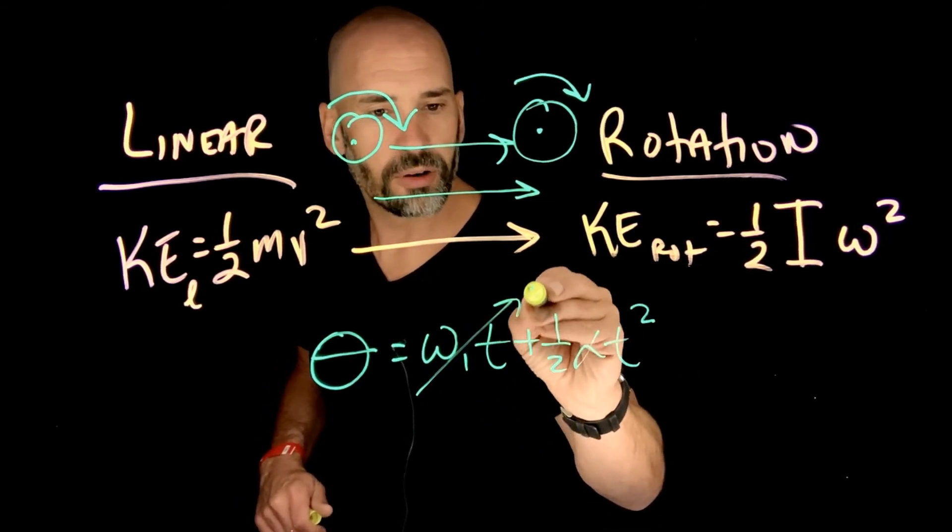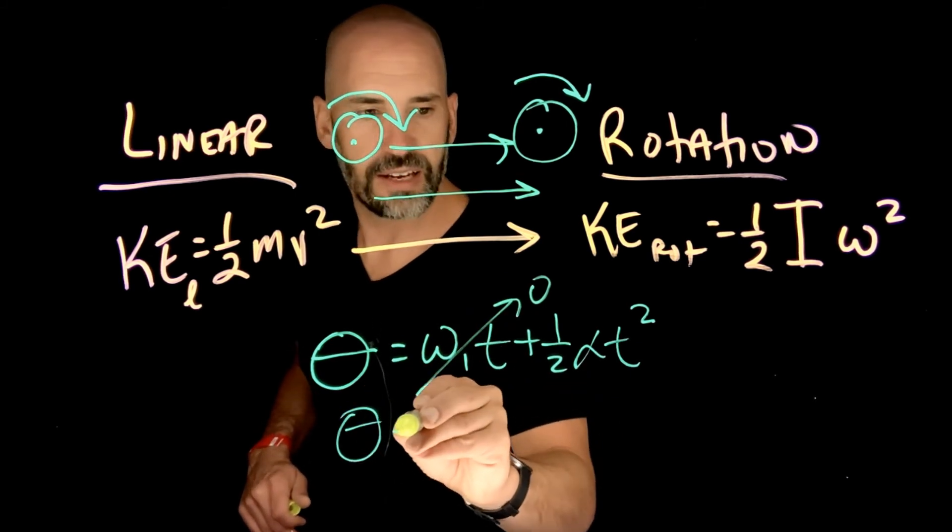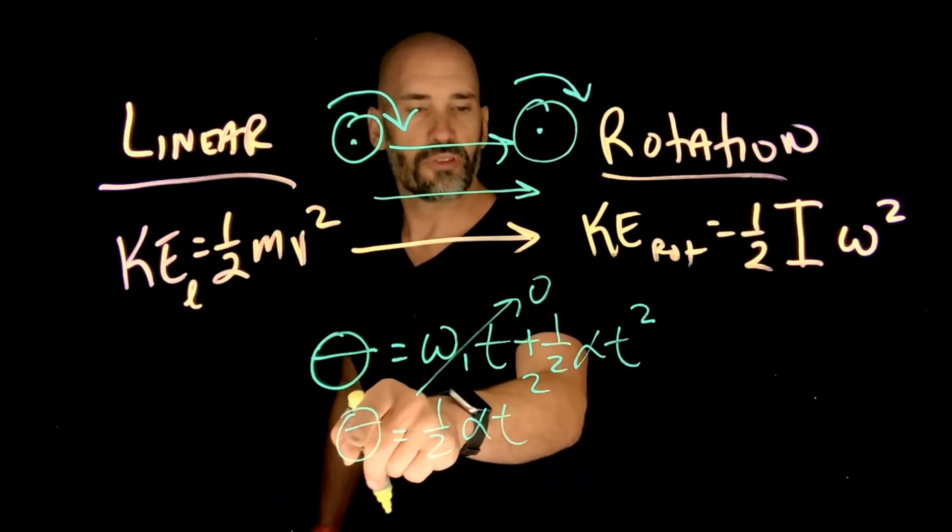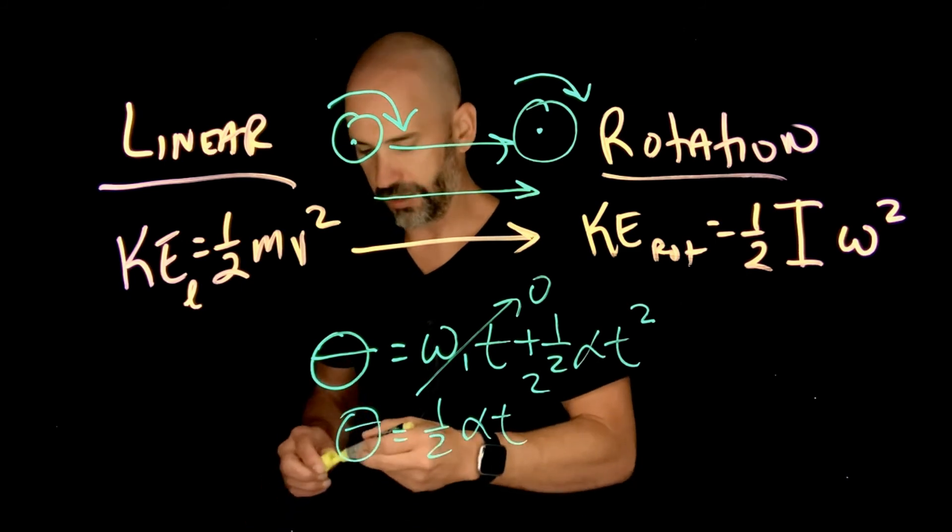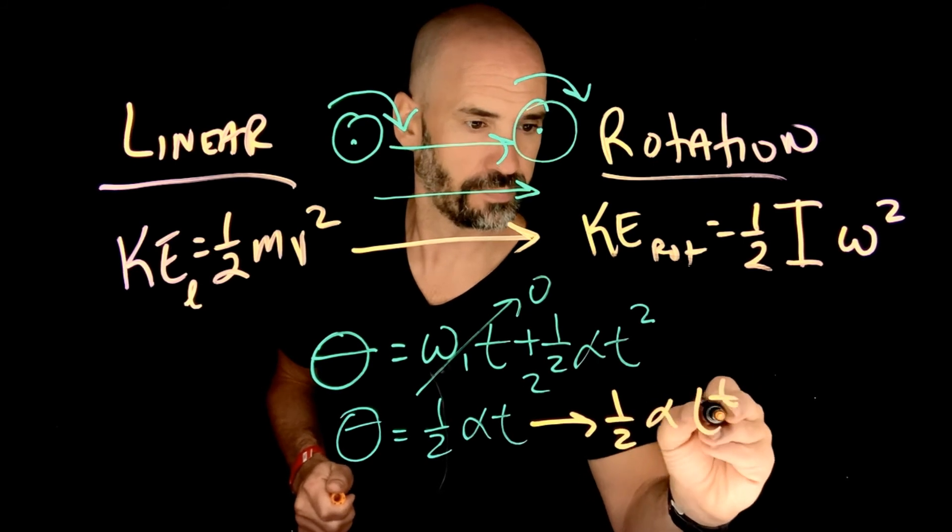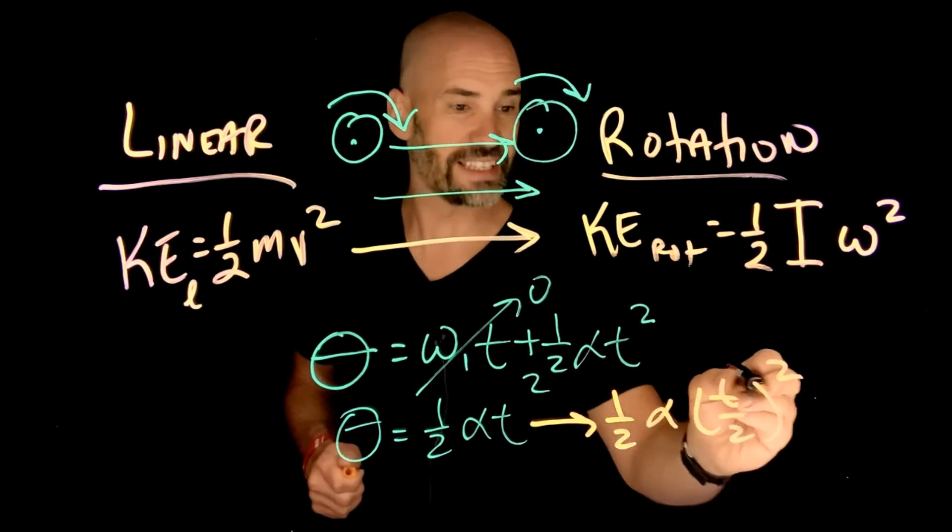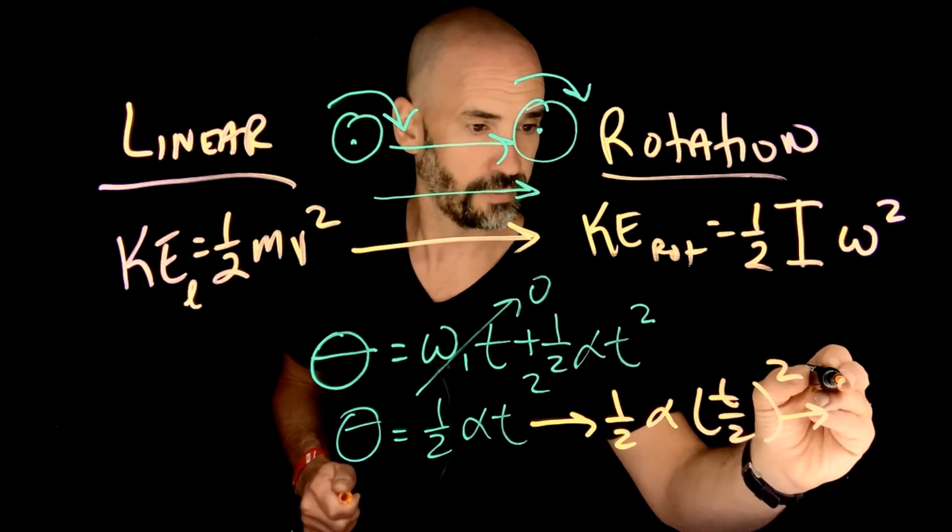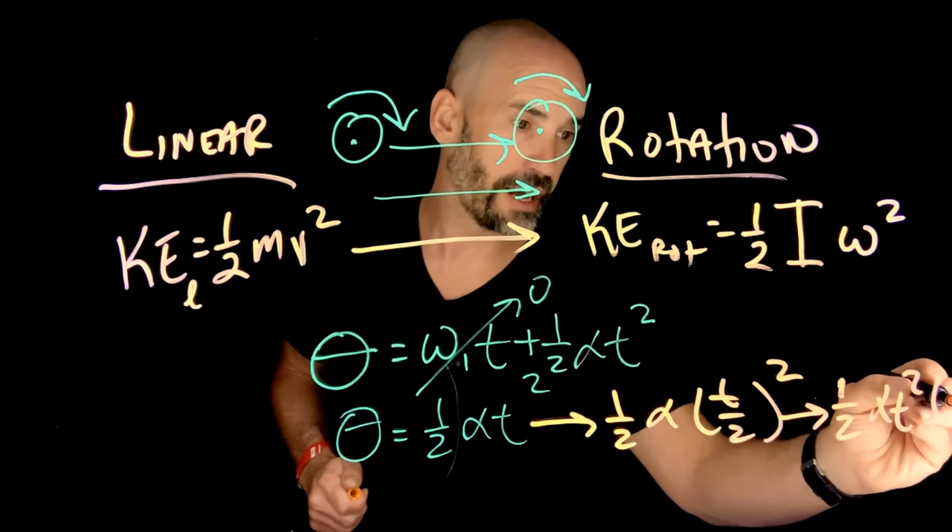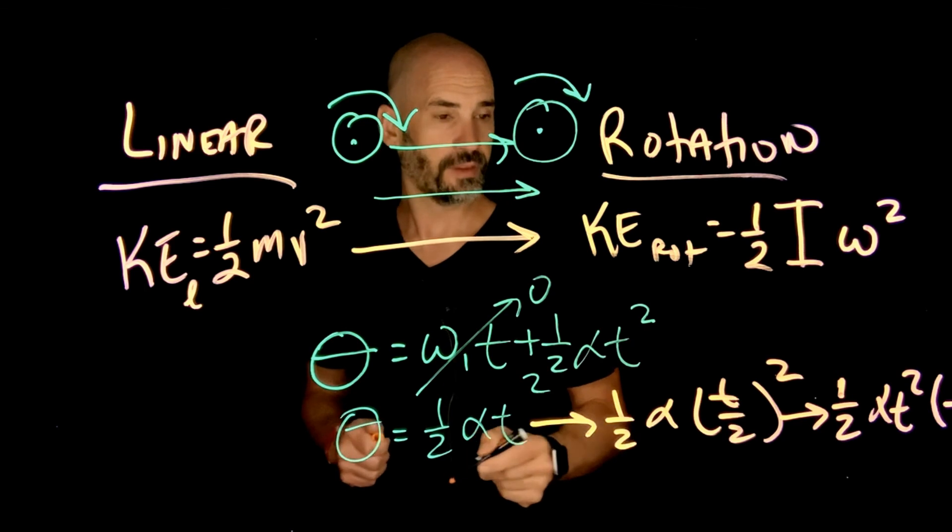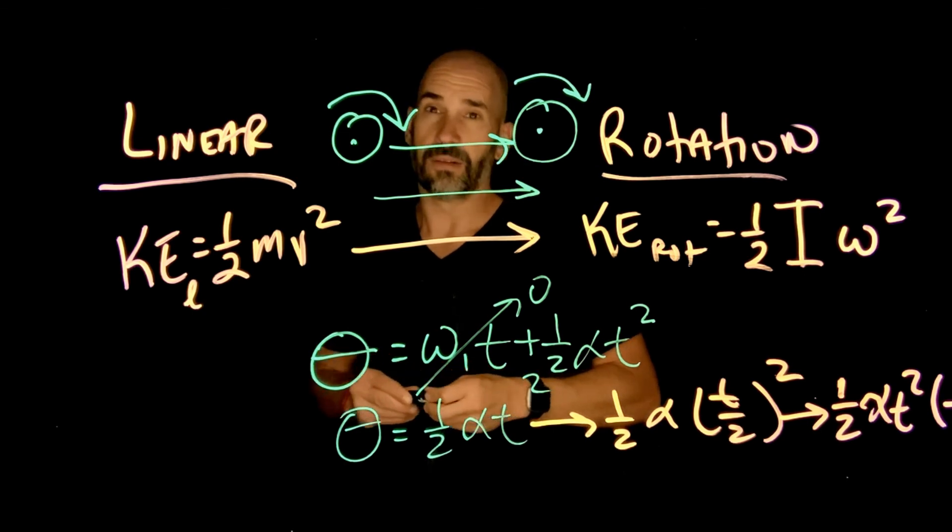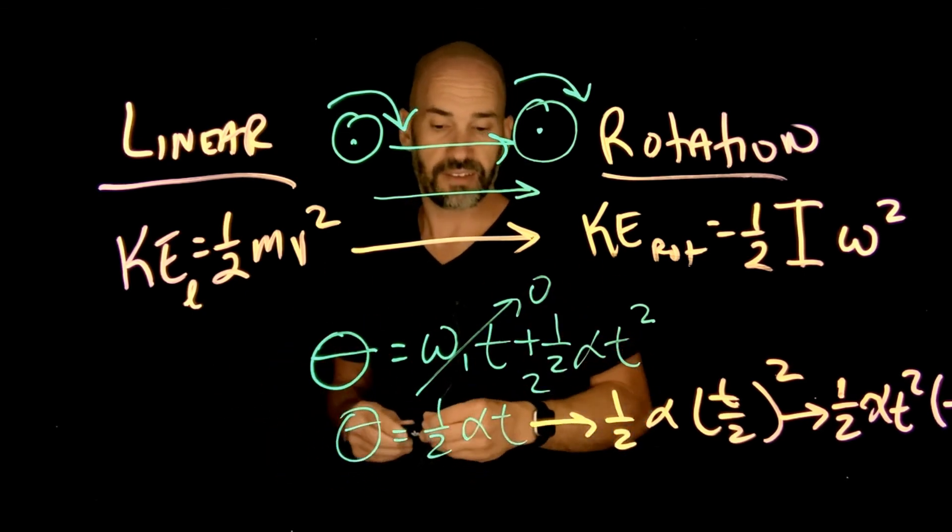So theta equals 1/2 αt². So what angle would I move through if I halve the time? Well, let's halve the time and see what happens. We get the same thing back, except there's this one over four at the bottom. This two is being squared, and you get one over four. So it would be a quarter of theta if it rotated for half the time. Make sense?